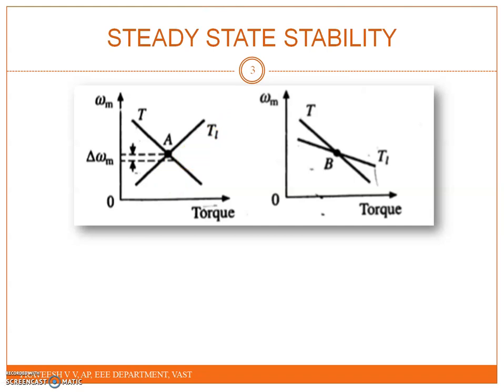First, we will examine point A. The equilibrium point will be termed as stable when the operation will be restored to it after a small departure from it due to a disturbance in the motor or load.